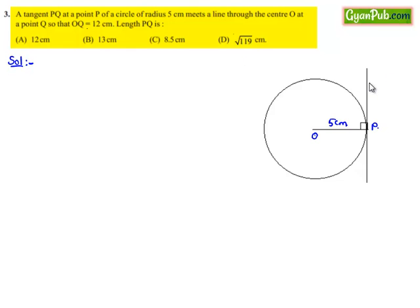Let us assume point Q somewhere on the tangent. We have OQ equal to 12 cm and need to find the length of PQ. Let us note the given information: radius OP and OQ.